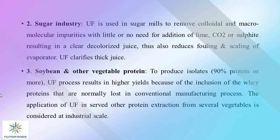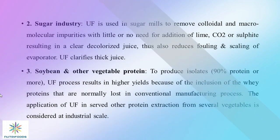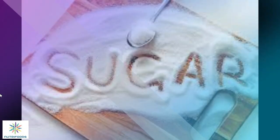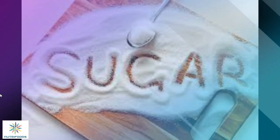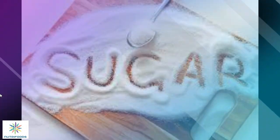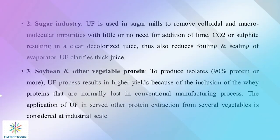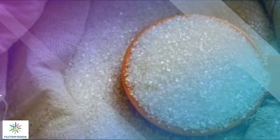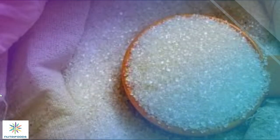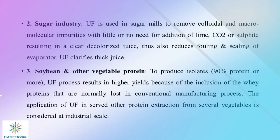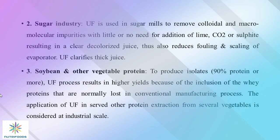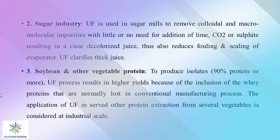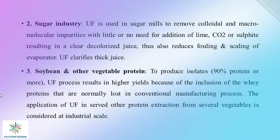Second is the sugar industry. Ultrafiltration is used in sugar mills to remove colloidal and macromolecular impurities with little or no need for addition of lime, CO2, or sulfite, resulting in a clear, decolorized juice. This also reduces fouling and scaling of evaporators, and ultrafiltration clarifies thick juices.